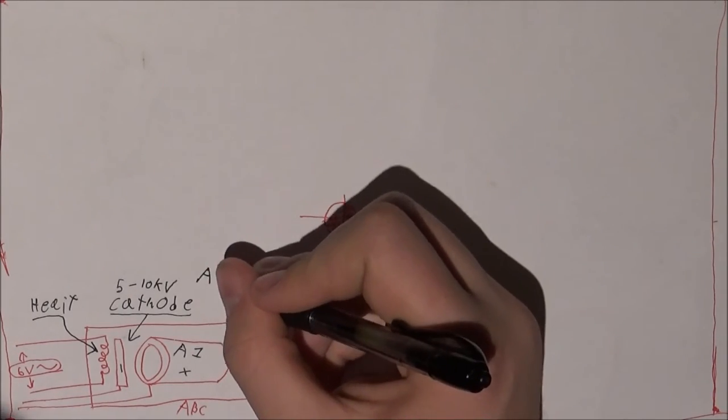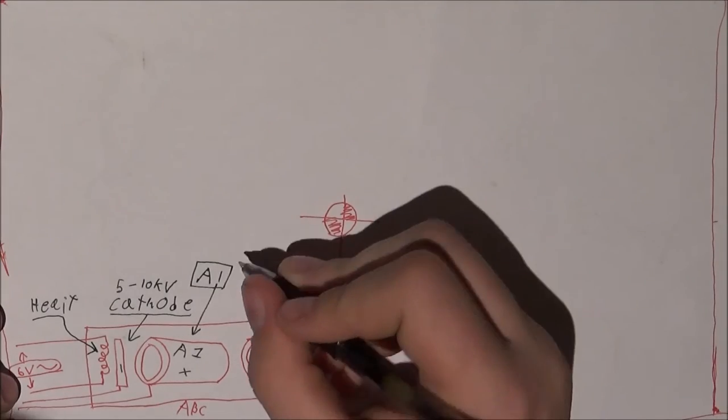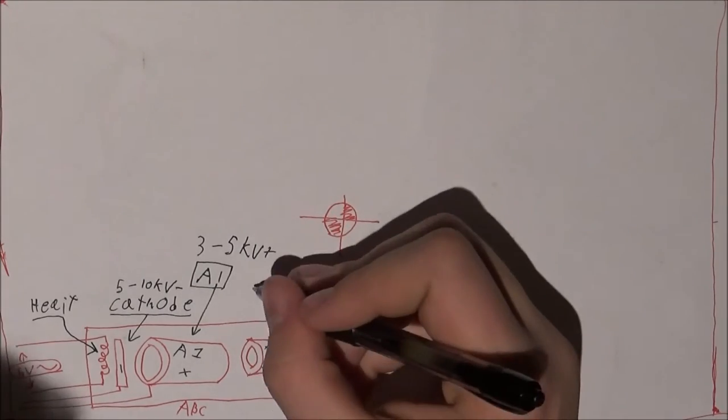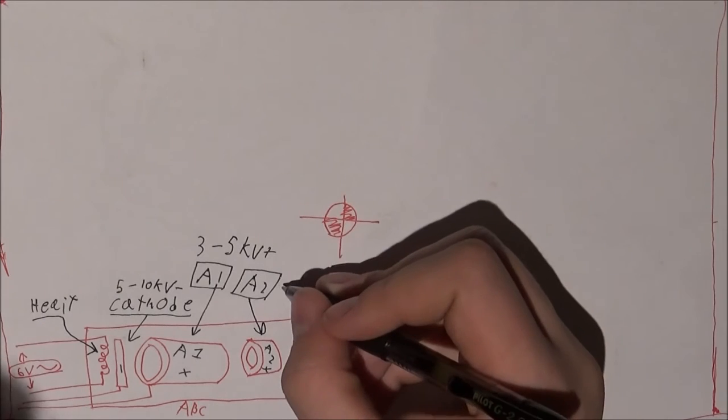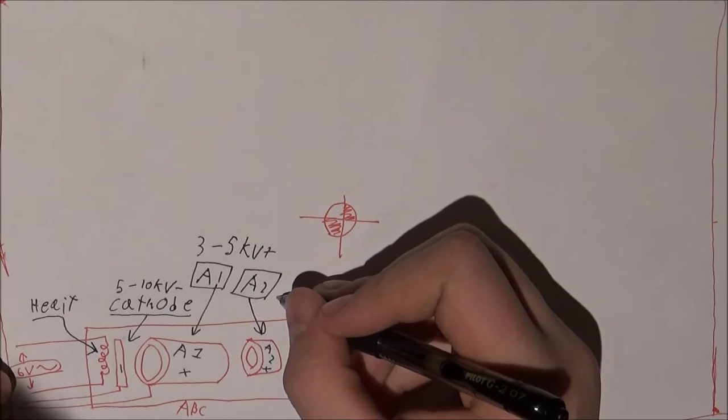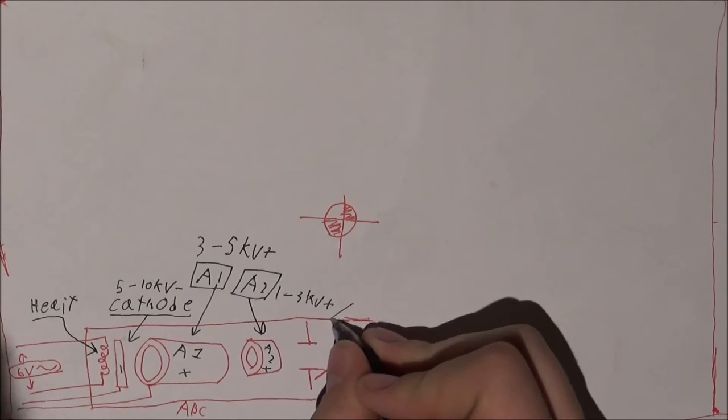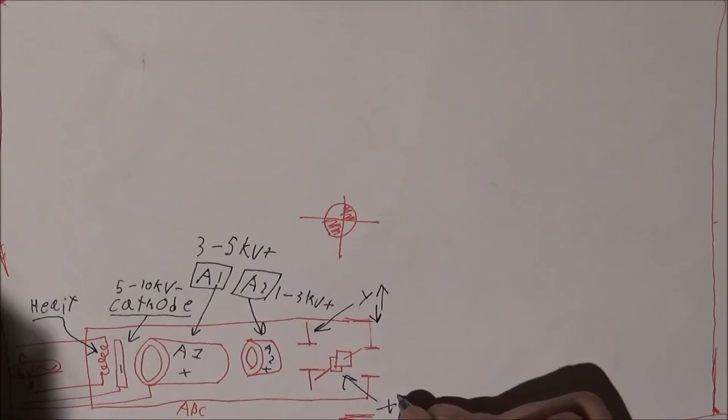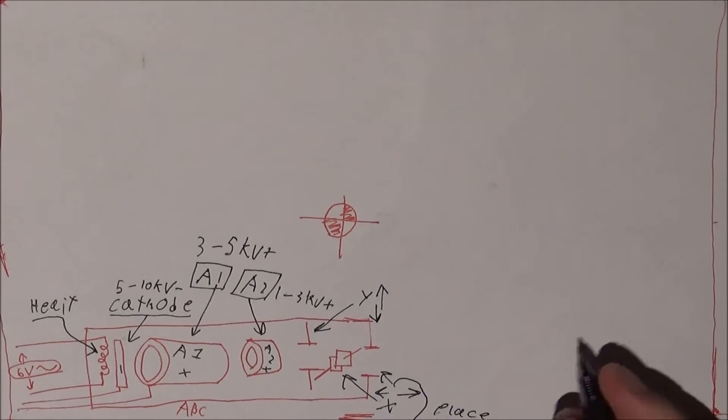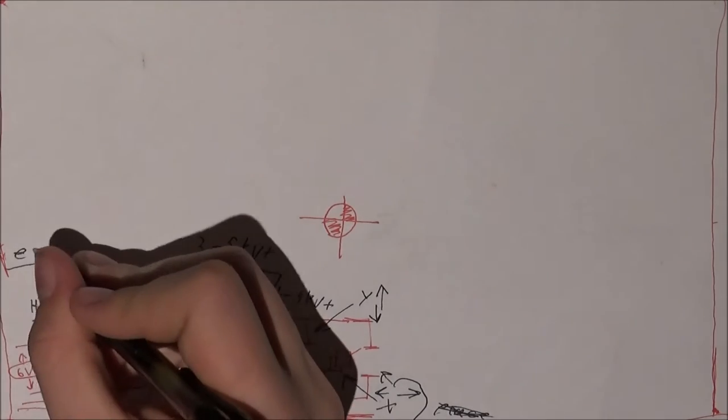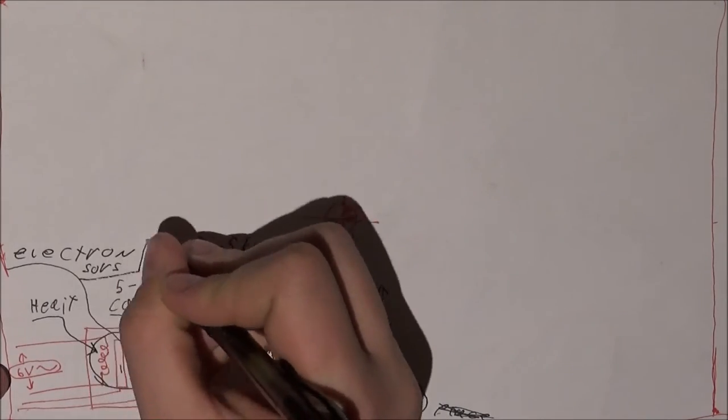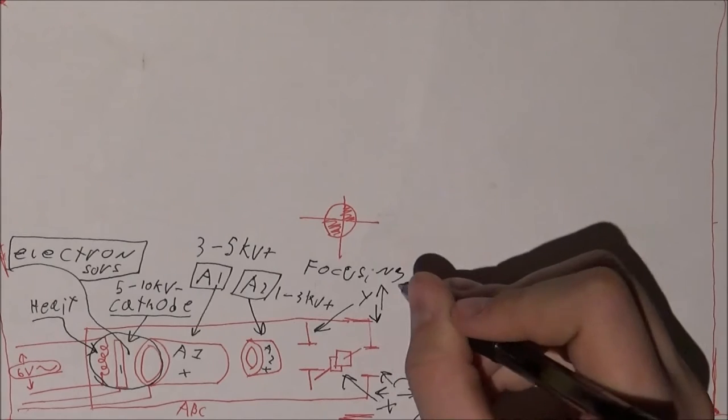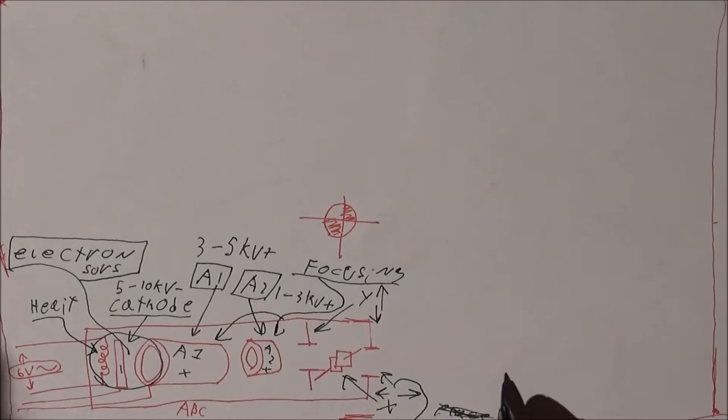Which then can be shot at a fluorescent screen and produce an image. This is an electron gun. A vacuum tube also produces electrons, but the electrons carry the flow of electricity from the anode to the cathode and do not always or usually ever form a beam. You can also put a grid in between the anode and cathode to amplify the signal.